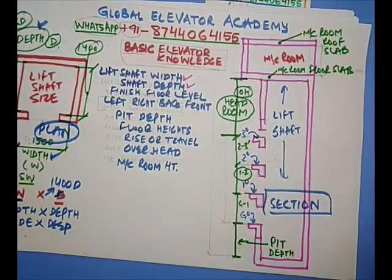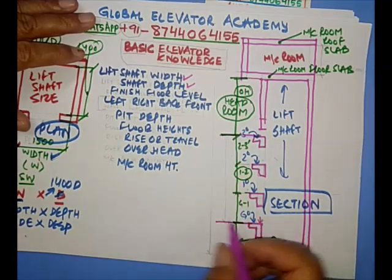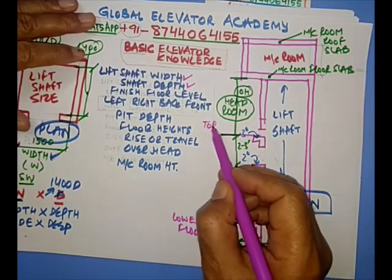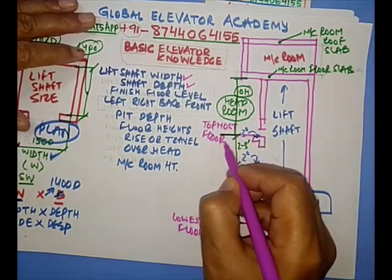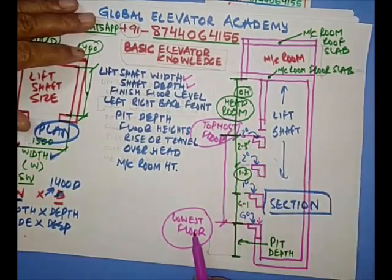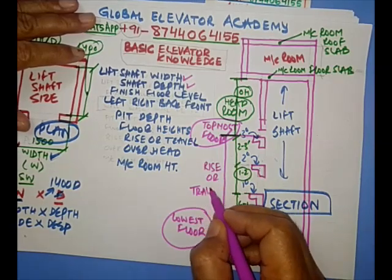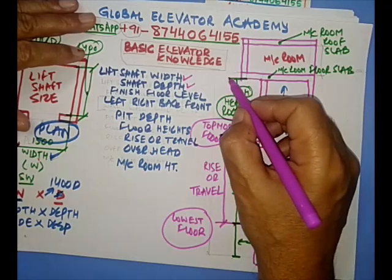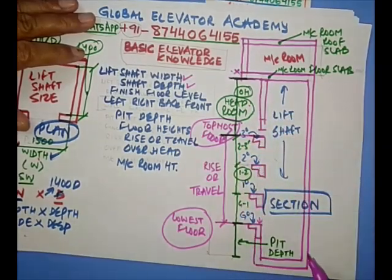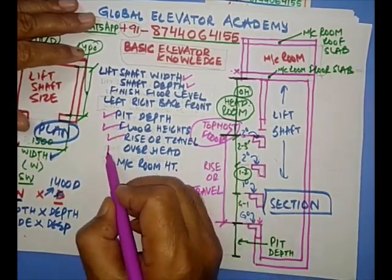Sometimes some people call it head room. And you have another distance here — from the lowest floor to the topmost floor. This distance from lowermost floor to topmost floor is called rise, or some people call it travel. From the top floor level to the underside of the machine room floor slab — this is called overhead. So we have seen floor height, rise, and overhead.